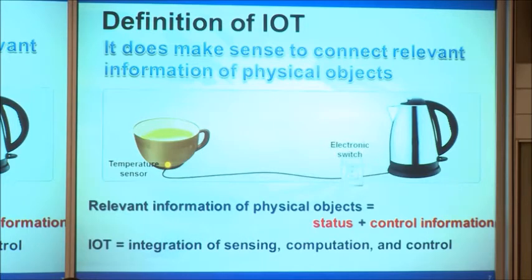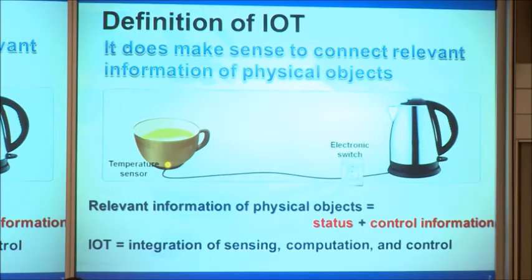You're really not connecting physical objects, but rather connecting the information of physical objects. The information can be divided into two kinds: one is static information, and the other is dynamic — like whether the water is hot or cold, or controlling information to turn on or turn off the switch. So in this sense, the Internet of Things really is the integration of sensing, computation, and control.